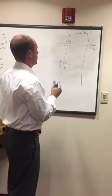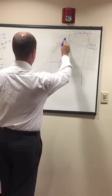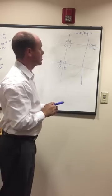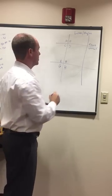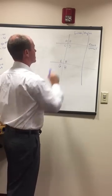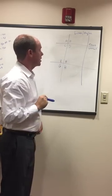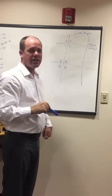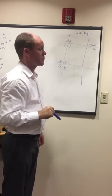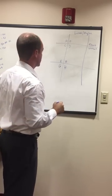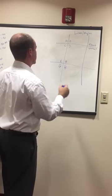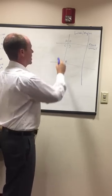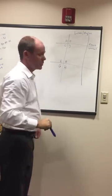The other rule we need to know is same side interior angles. In this case, A and C are same side interior, and so are B and D. Same side interior angles also have to add up to 180. So same kind of thing — if C equals 80, A is going to have to be 100.